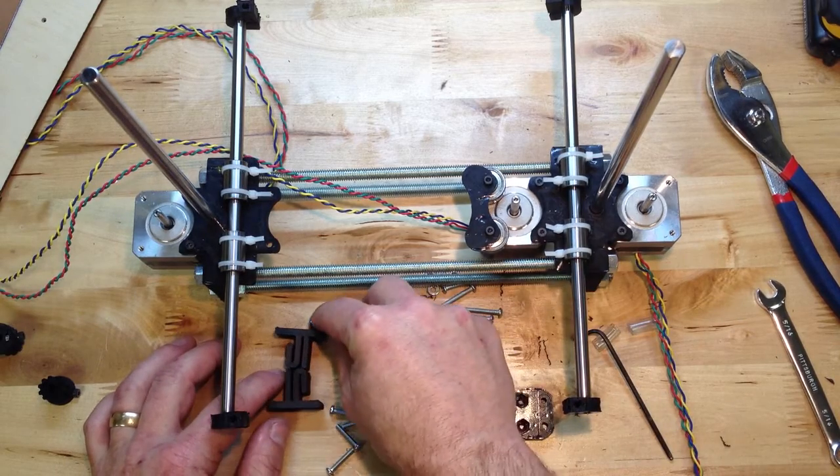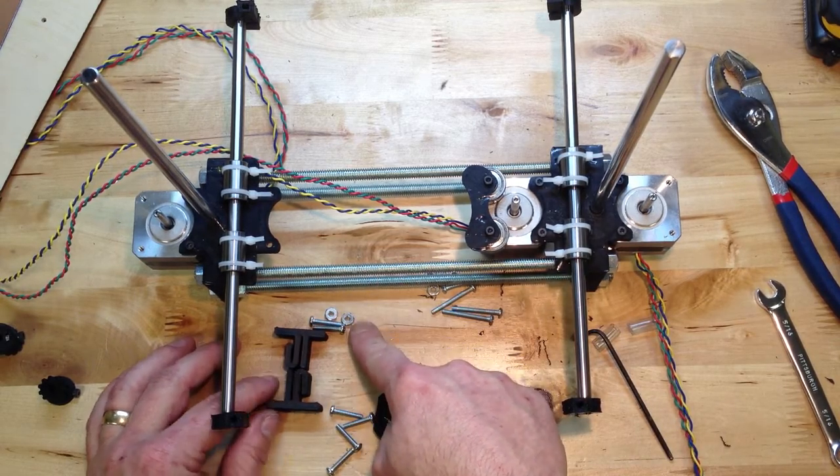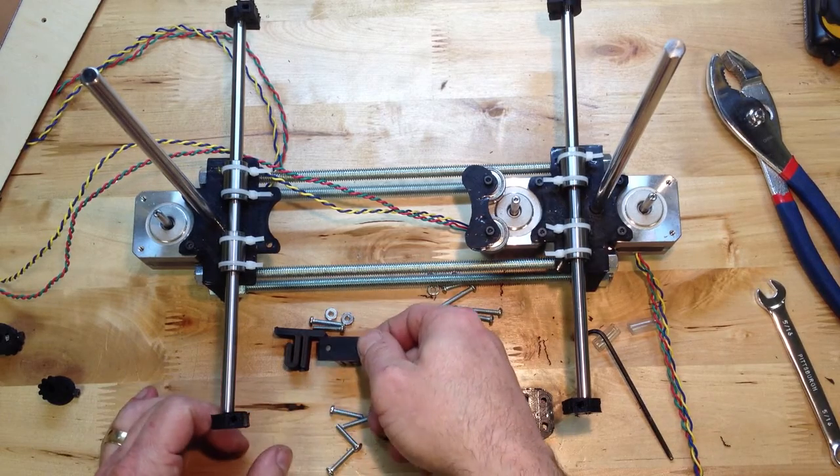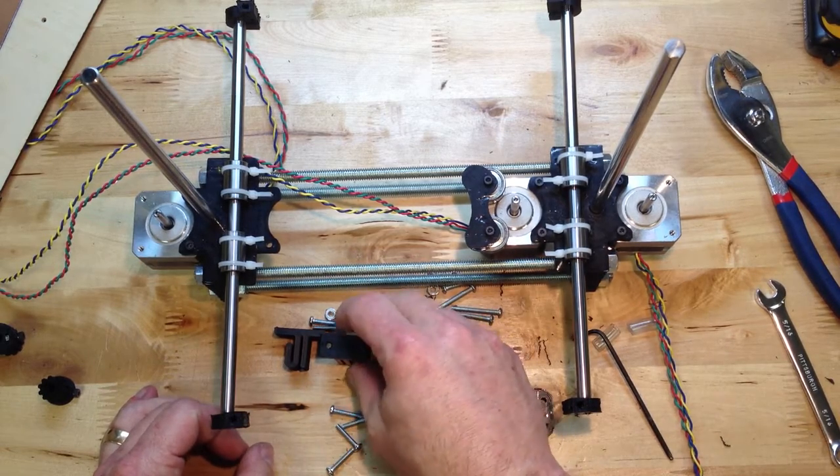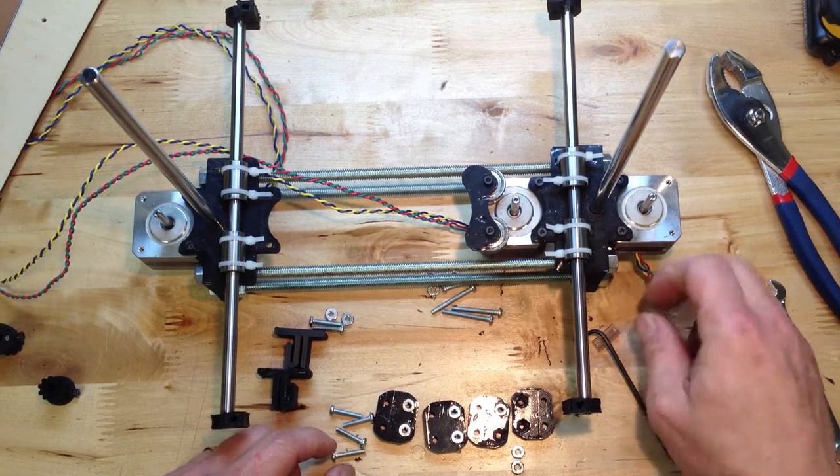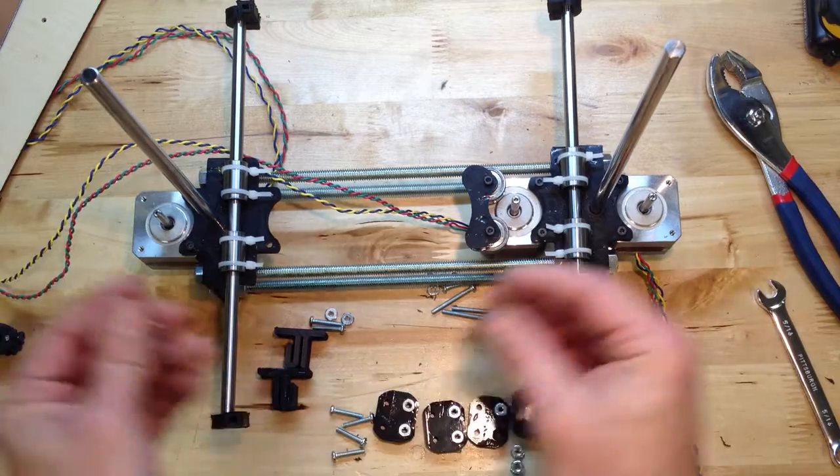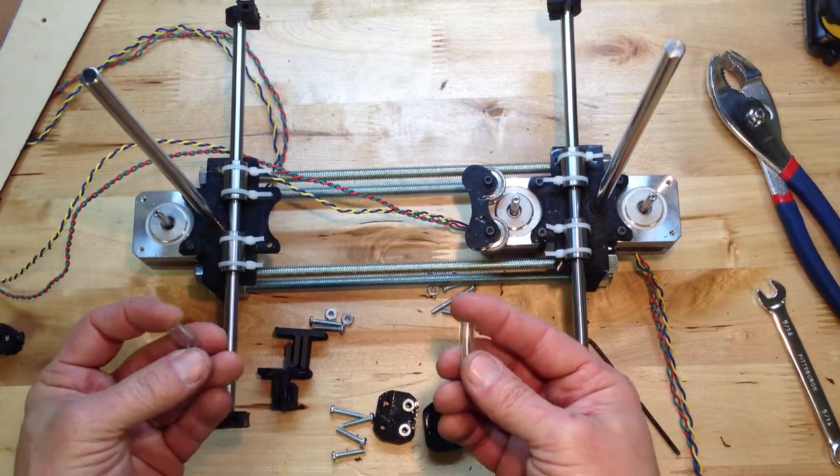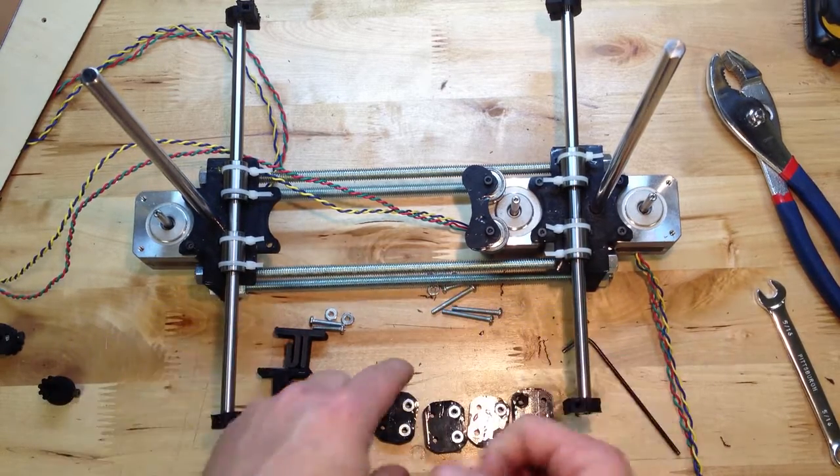We'll assemble these three-quarter inch screws with six thirty-two nuts. They'll actually be two each. And we'll put them down through the bed onto that, but I wanted to take care of a lot of these little parts right off the bat here with this stage. So this is just some tubing.